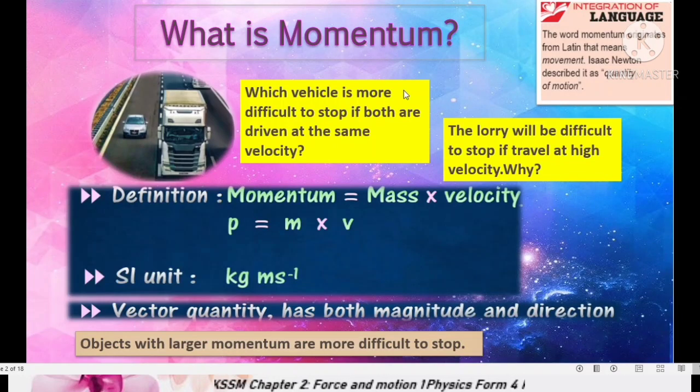What is momentum? The word momentum originates from Latin that means movement. Isaac Newton described it as quantity of motion. If you look at this picture, there is a very large truck or lorry and a car.